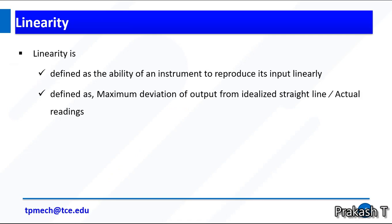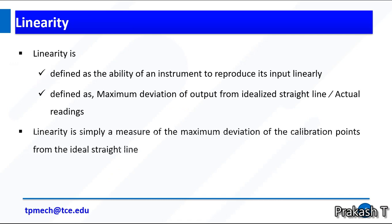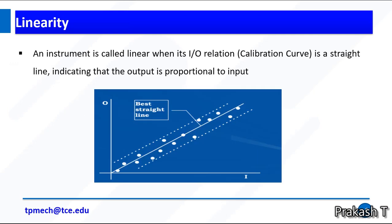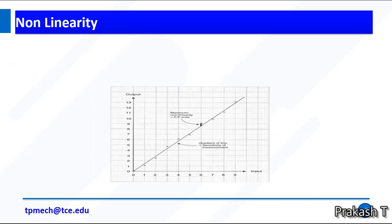Linearity can be defined as the ability of an instrument to reproduce its input linearly. It's defined as the maximum deviation of the output from the idealistic straight line or actual reading. From this image you can observe this is what we need, the best straight line. For example, the dotted points are the sourced values. An instrument is called linear when its I/O relation is a straight line, indicating that the output is proportional to the input. Most equipment needs linearity.